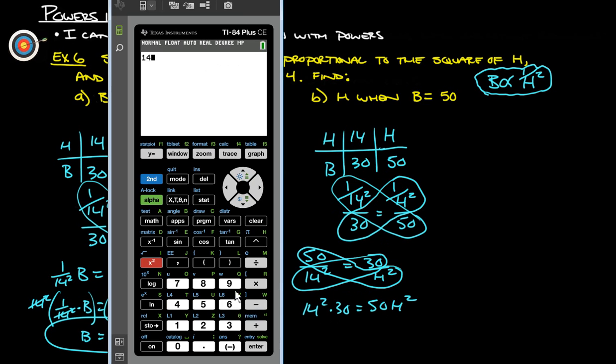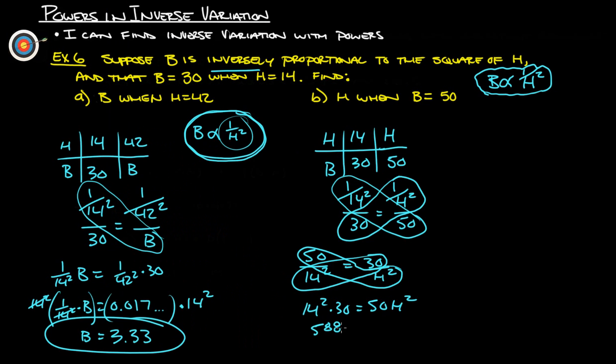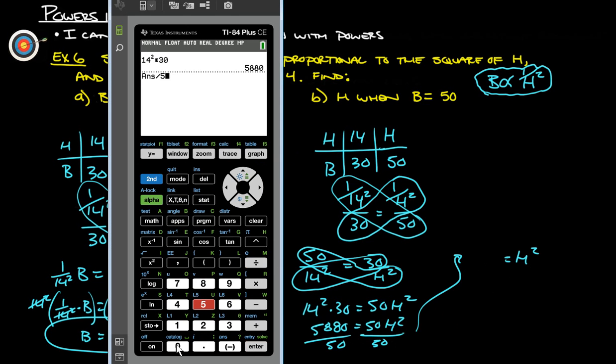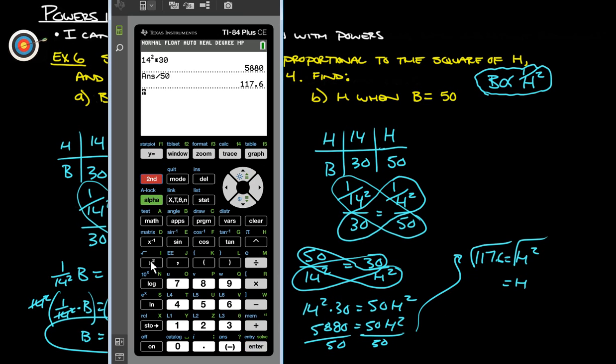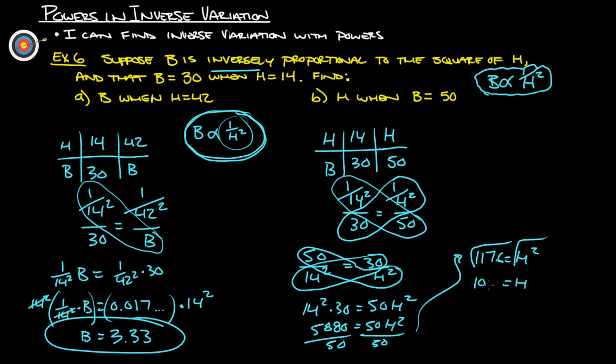14 squared times 30 gives us 5880, and that's going to be 50 H squared. So we want to divide both sides by 50, and that gives us H squared equals 117.6. But we've got to get rid of that squared, so we have to square root both sides, and that tells us that H is square root of our answer, and we get 10.8.